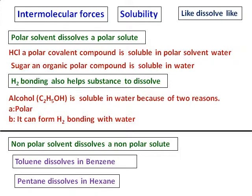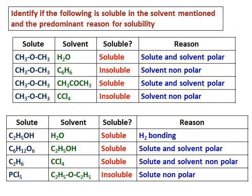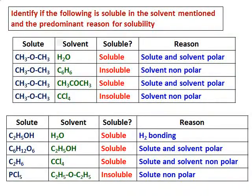So basically, a substance is soluble: a polar in a polar substance, a non-polar in a non-polar. And hydrogen bonding will also initiate solubility. Now, identify if the following is soluble in the solvent mentioned and give the predominant reason for solubility.